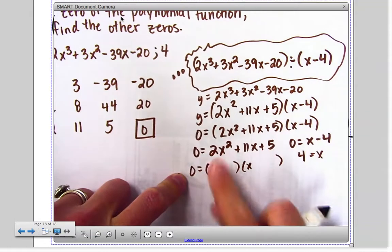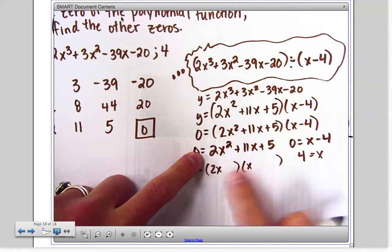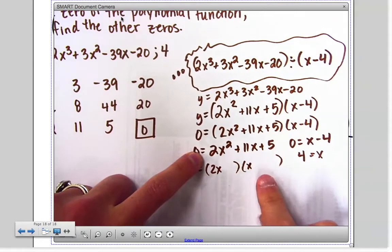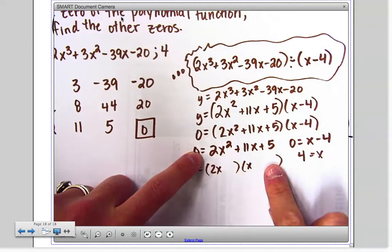This one's easier because this is a prime number and this is a prime number, so there's only a few options that I have to test here. 2x and x are my only options there to get a five. I can only put ones and fives here, a one and a five here.